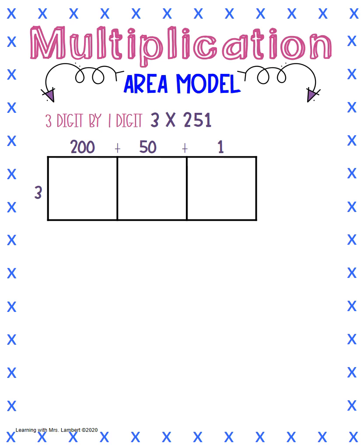We're going to take our three on the outside and multiply that by the number above our first box, 200. So when I have three times two, that's six, and then we need to bring down the two zeros. So three times 200 would give us 600.